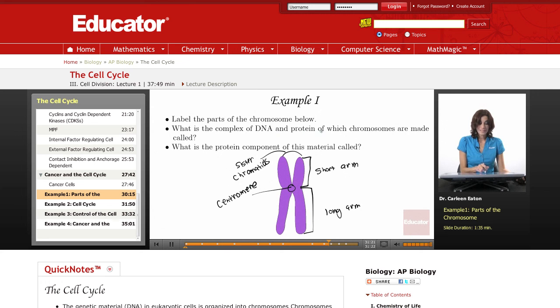What is the complex of DNA and protein of which chromosomes are made called? So, what is a chromosome made out of? It's made out of chromatin.